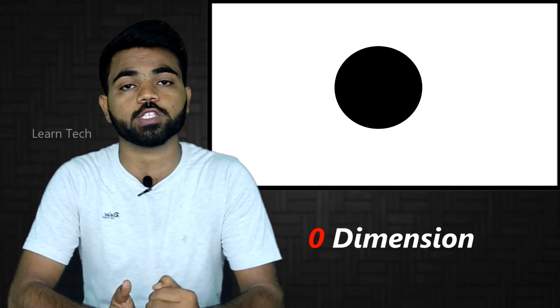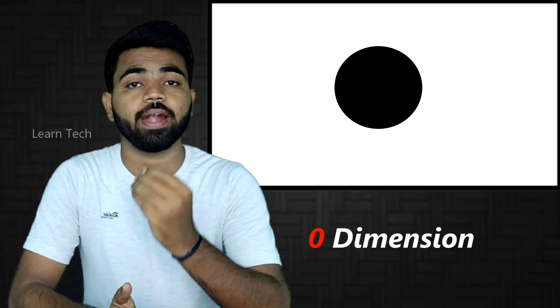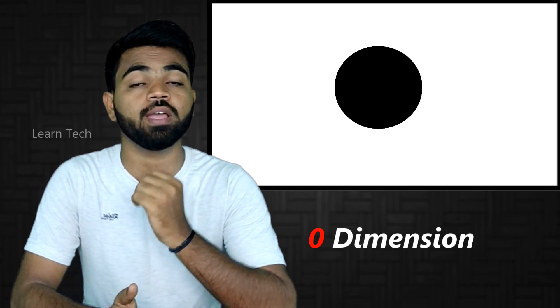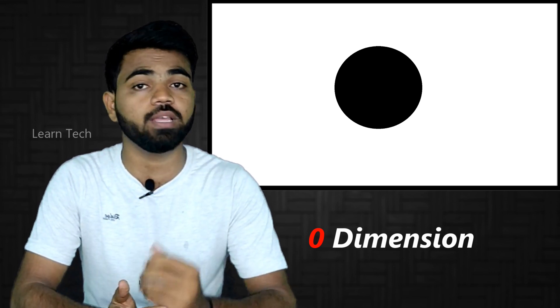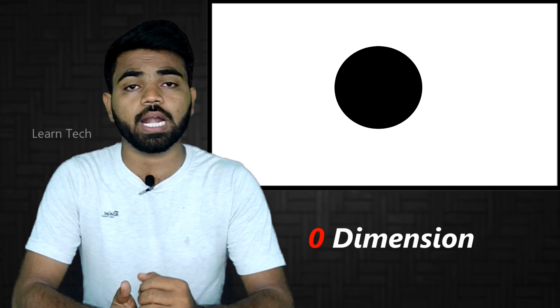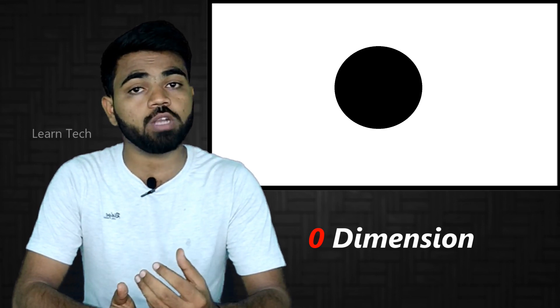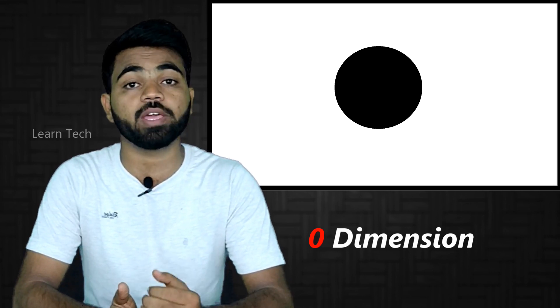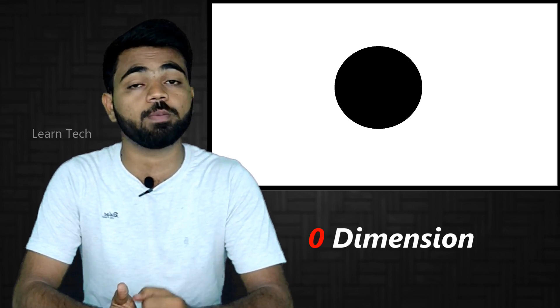If you look at the 0th Dimension, we'll see a dot. In any dimension, there is a height and a width. In the 0th Dimension, we see a maximum of a single dot.